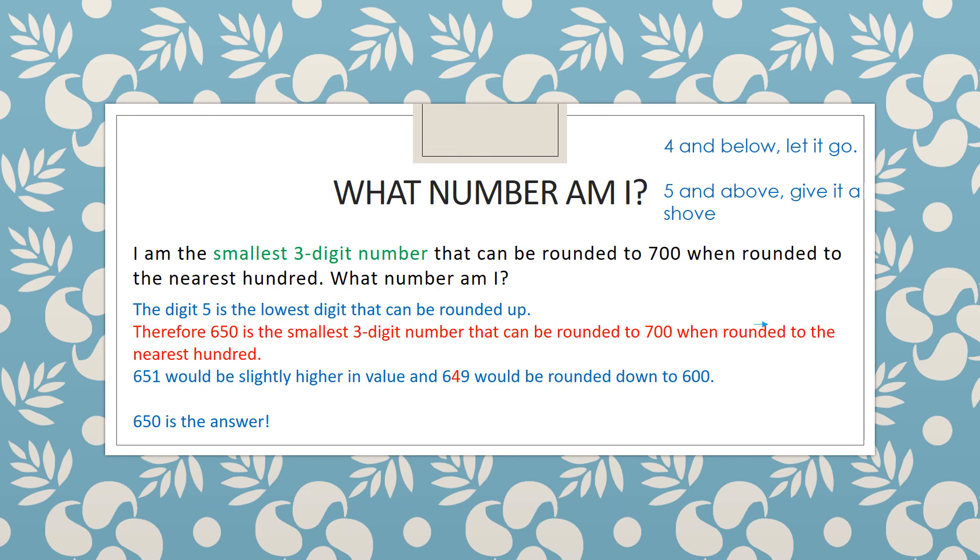The digit five is the lowest digit that can be rounded up. Therefore 650 is the smallest three-digit number that can be rounded to 700 when rounded to the nearest hundred.